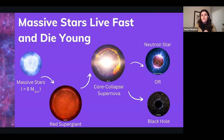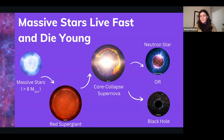For a neutron star, the star wasn't quite massive enough to collapse all the way to a black hole. There's no fusion occurring in a neutron star; it's maintained by a quantum mechanical principle requiring neutrons to repel each other — neutron degeneracy pressure. They're ultra-dense: a tablespoon of neutron star material on Earth would weigh as much as Mount Everest. They're not large — most have radii of around 20 kilometers — but they're incredibly dense.